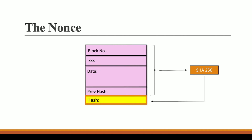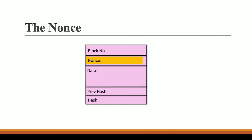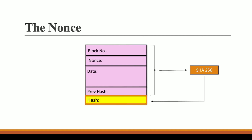But miners require a field which they can change in order to solve the mathematical problem — and that field is nonce. Nonce is a number which gives power to the miners so they can solve that mathematical problem. Block number, data, and previous hash cannot be changed, but nonce is a number which the miner can change.